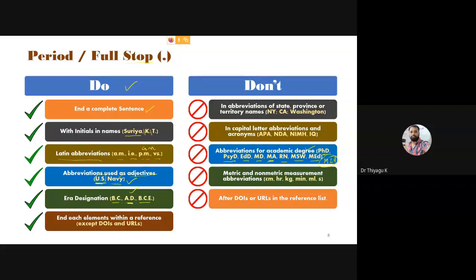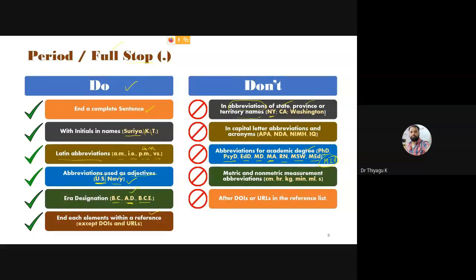Don't blindly accept that all abbreviations use full stops. In the case of abbreviation of state, province, or territory names, don't use full stops. For example, if you want to highlight Kozhikode, Kerala — don't use full stops. NY represents New York — they don't put any full stops. Then for capital letter abbreviations like APA, NDE, NIN, IQ — these terms we won't use any full stops.